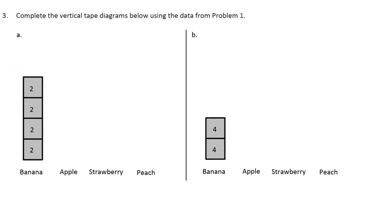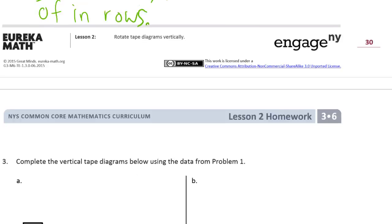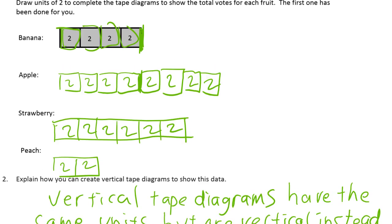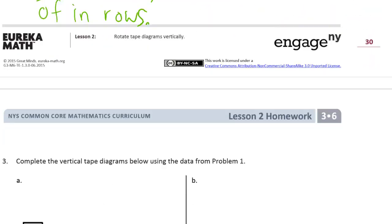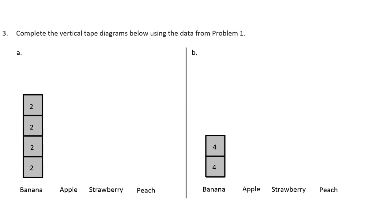Now make vertical tape diagrams below using the data from problem one. Bananas had four twos, right? And apples had eight of them. So this is a case where if you do this, it's going to be twice as tall, so it's going to end up going up into the letters up here.